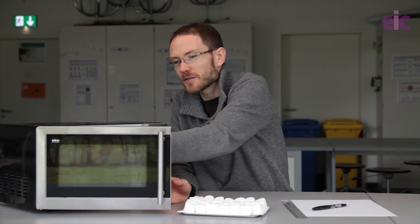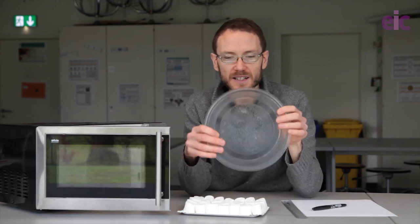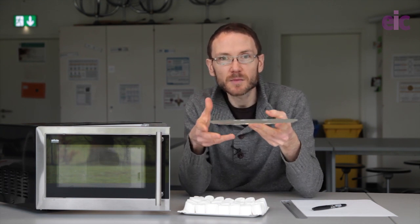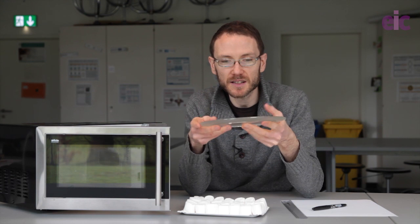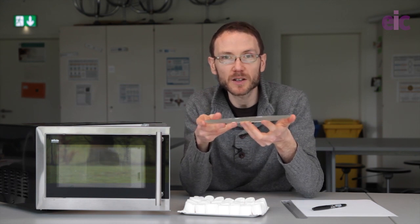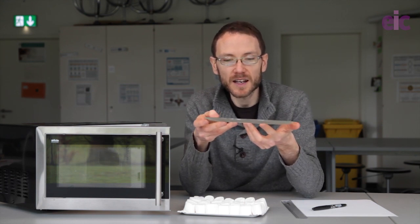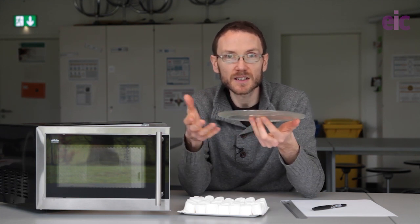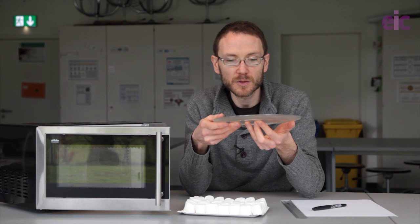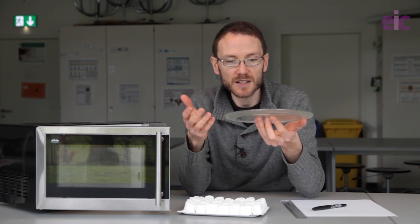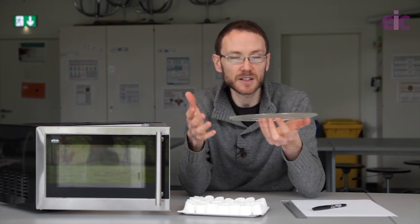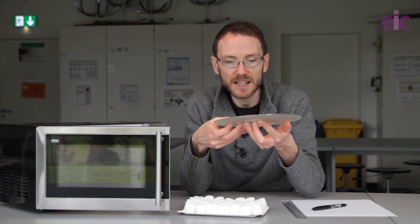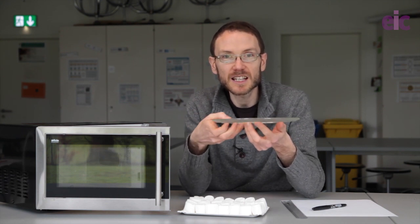Inside every microwave we have a plate that rotates. The idea being that inside the microwave cavity there's going to be a standing wave set up of microwave radiation, and some parts of the food if it's not rotated will get hot because they're going to be lined up either with a node or an anti-node. So you want to rotate the food to make sure that it's evenly being heated.